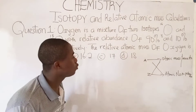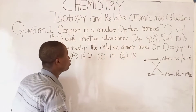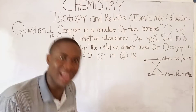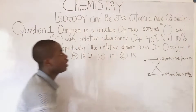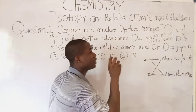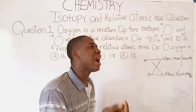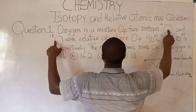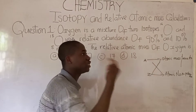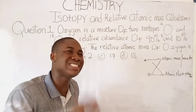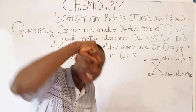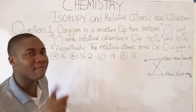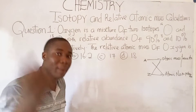Now, what do I mean by isotopy? Isotopy is a phenomenon whereby atoms of the same element — if you check this question carefully, you can see they gave us two isotopes. These isotopes are of the same element and they are in their atomic state. You can see here we are having two atoms of oxygen. Isotopy has to do with the same element having the same atomic number but different mass number.